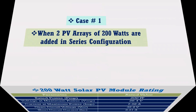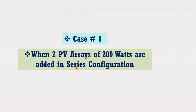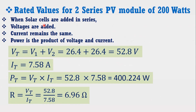Now let's consider a case in which two solar PV arrays are added in series. Both have the rating of 200W with the same voltage and current as mentioned in the table. In series connection, voltages are added whereas current remains the same. Therefore, when two solar PV arrays having voltage of 26.4V are added, their total voltage will become 52.8V, whereas current remains the same at 7.58A. Since power equals voltage times current, two 200W arrays in series will provide a total power of 400.224W.